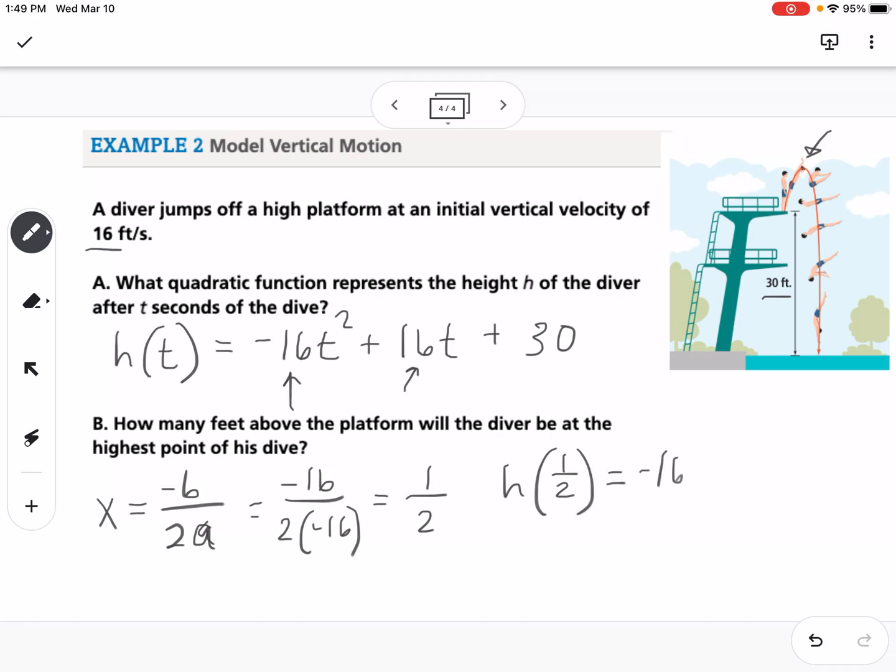So that would be negative 16 times 1 half squared plus 16 times 1 half plus 30.